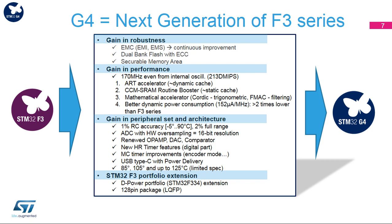This evolution is also present in all communication digital peripherals. The USB Type-C power delivery peripheral is a new feature for USB power control. The STM32G4 series has an extended temperature range up to 125 degrees Celsius. Thanks to a new design technology, the STM32G4 dynamic consumption is less than half of the STM32F3 series consumption.